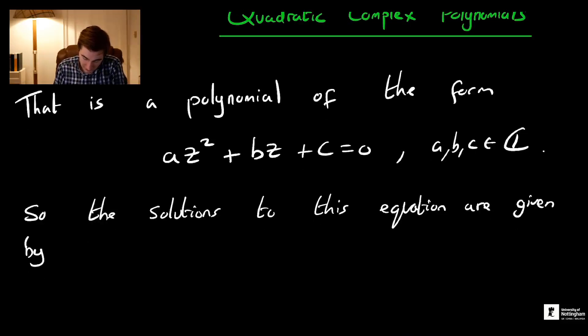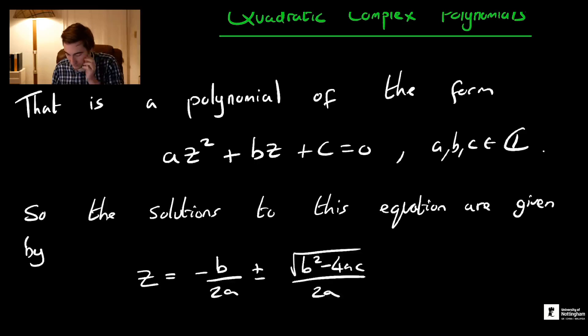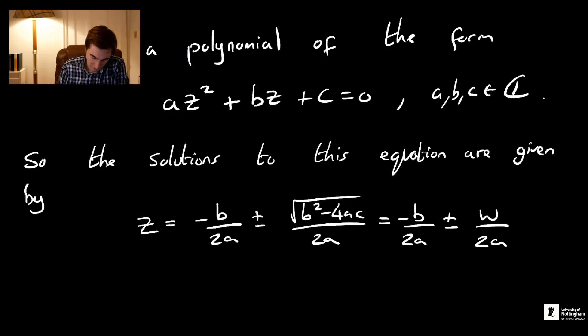z = -b/(2a) ± √(b² - 4ac)/(2a). We're going to write this as -b/(2a) ± w/(2a), where w squared, by definition, equals b² - 4ac.